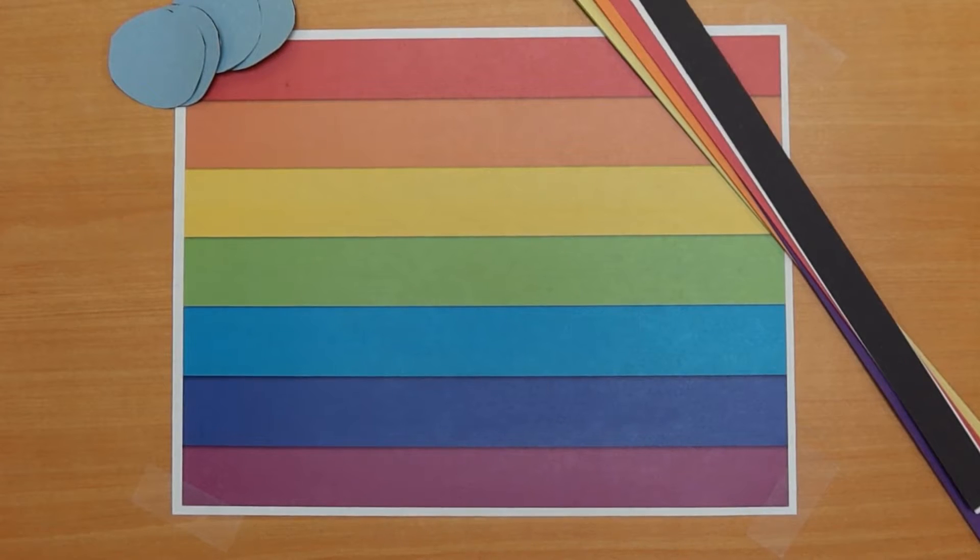For those who have these supplies, you'll want to cut 8 strips of paper. They should be 11 to 12 inches in length, and a half to three-fourths inch in width. You will also want to cut out four circles, about one and a half inches in diameter. If you are picking up a craft kit from the library, your paper will already be cut. The paper you will receive will be rainbow colors.